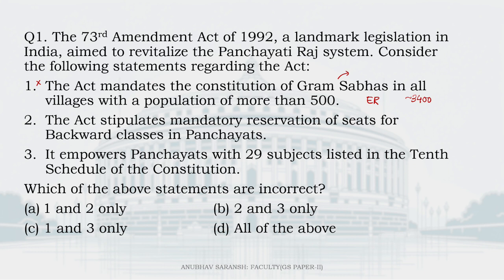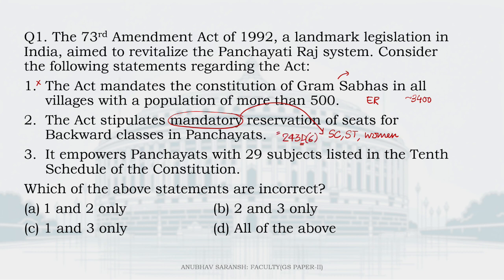Statement two: The Act stipulates mandatory reservation of seats for backward classes in Panchayats. If you refer to Article 243D, which is a very important provision regarding reservation in Panchayats, you will find that mandatory reservation is meant for Scheduled Castes, Scheduled Tribes, and of course women. However, clause 6 very clearly says it is completely optional — it depends on the state legislature whether it wishes to provide reservation for backward classes or not. So, it is not mandatory.